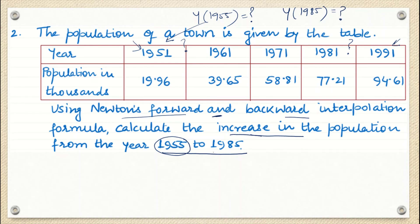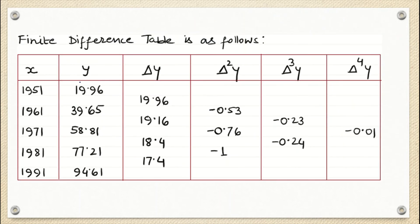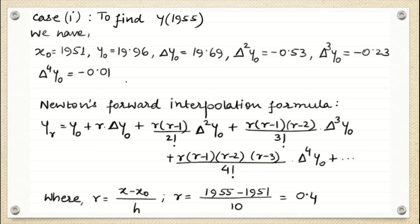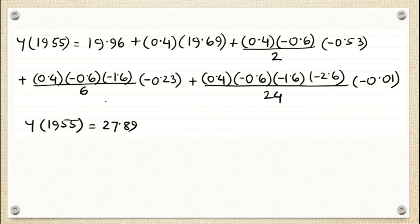To get y1955, we use Newton's forward interpolation formula because 1955 is near to x naught. We build the finite difference table, then the Newton's forward interpolation table. We identify the relevant values, compute r, and substitute into Newton's forward interpolation formula. Finally we get the value of y1955, which came out to be 27.89.